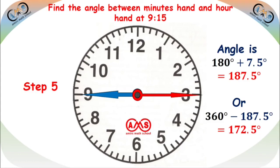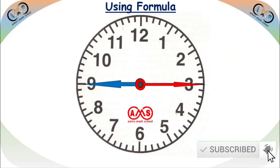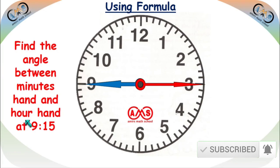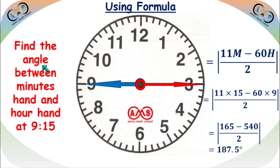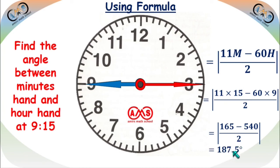In this way, using these 5 steps, we can find any angle at any given time. Let's solve it using the formula for 9:15. The formula is the absolute value of (11m minus 60h) divided by 2, where m is 15 and h is 9. We have: absolute value of (11×15 minus 60×9) divided by 2 = absolute value of (165 minus 540) divided by 2 = 187.5 degrees. If we want the other angle, subtract from 360.